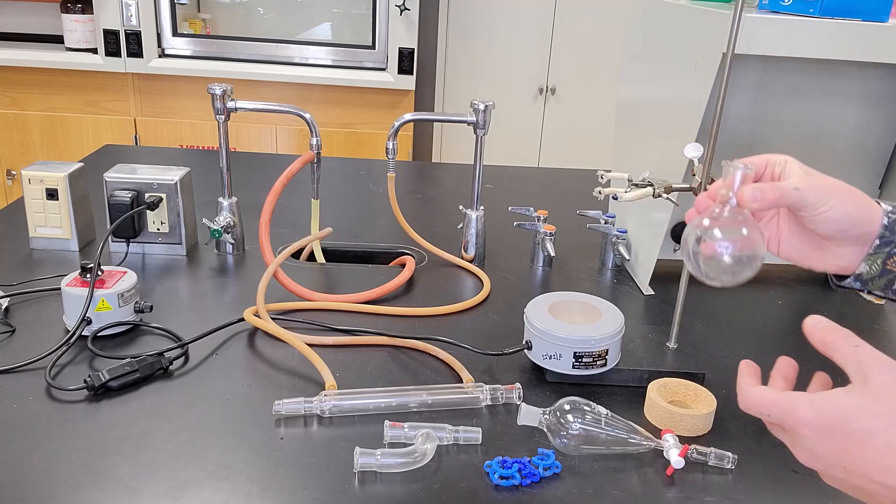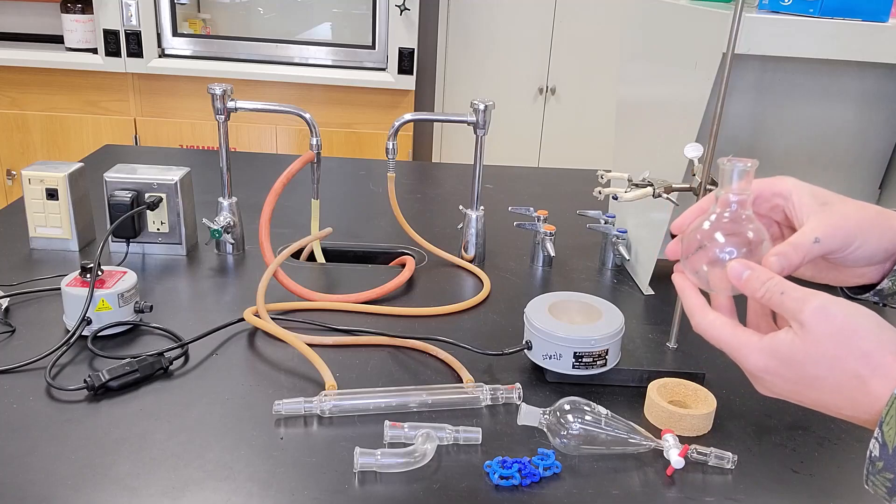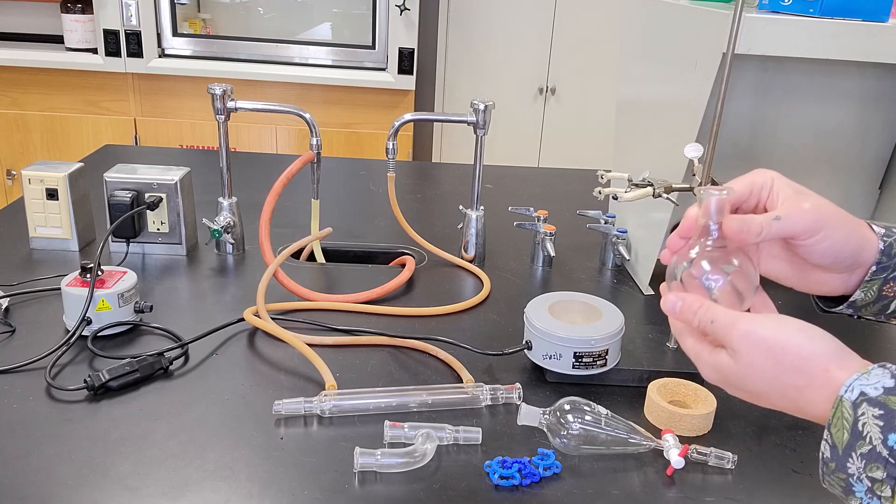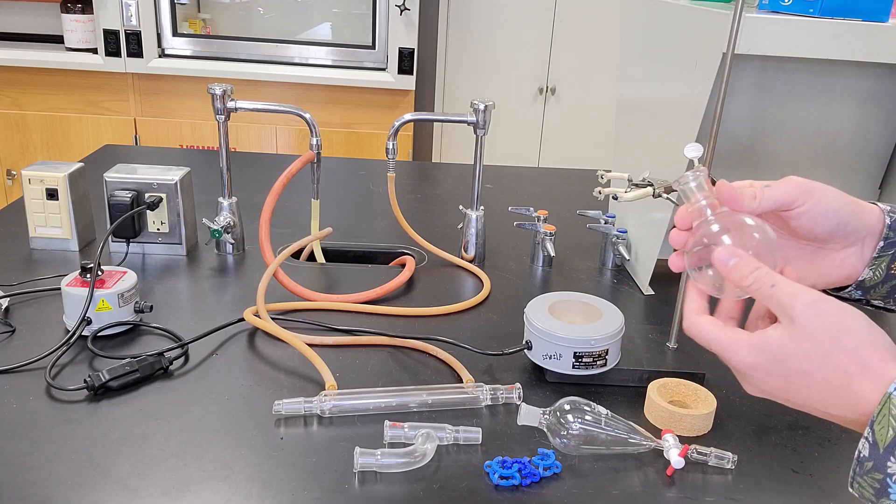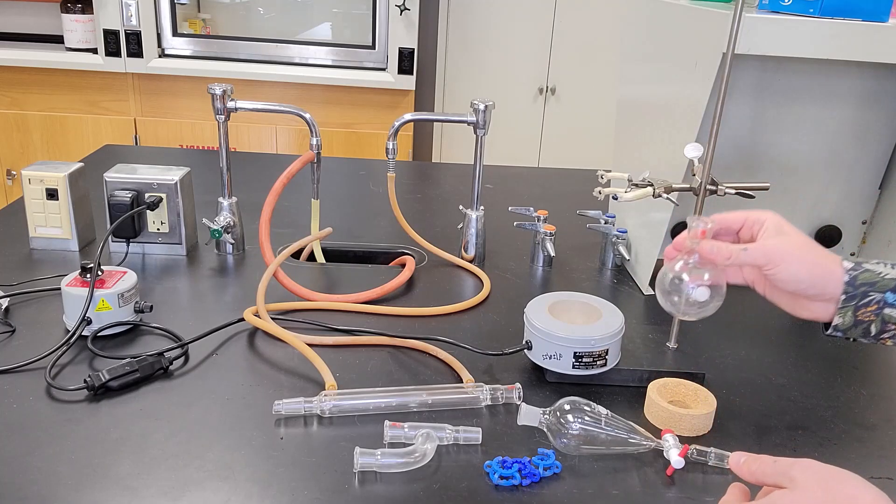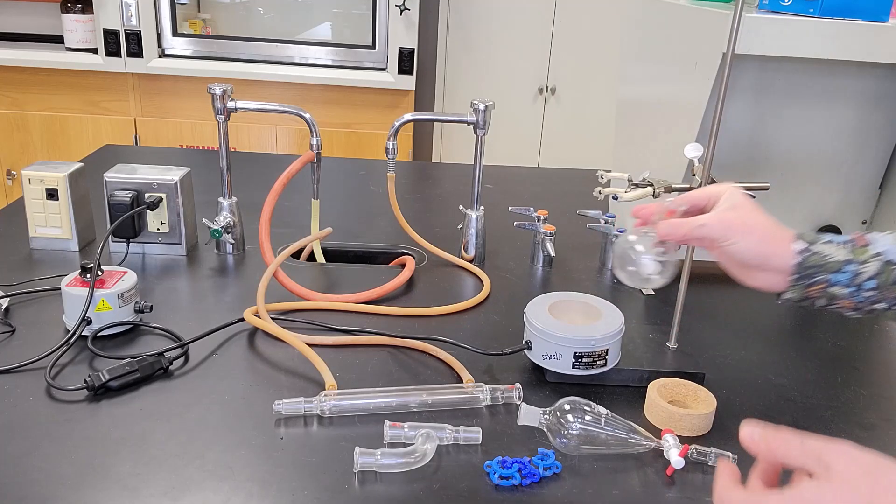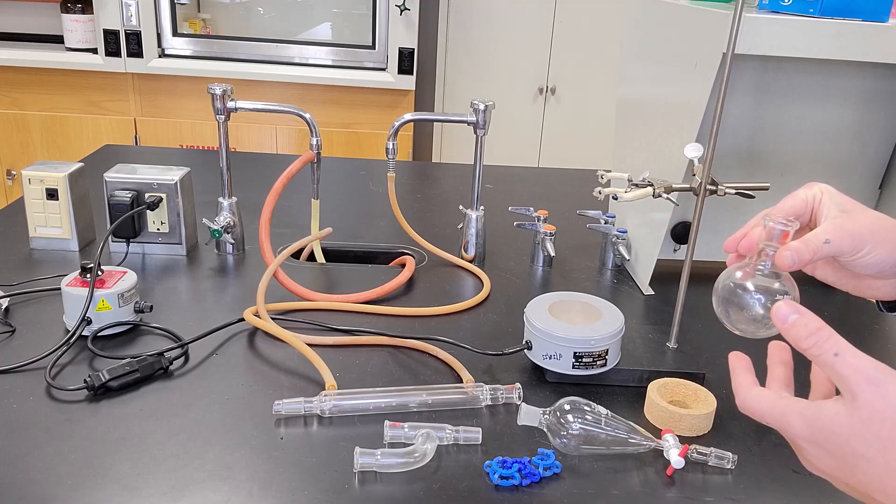So again, similar to our previous setups, we would have our original reaction mixture or starting materials in a round bottom flask. This is a fritted round bottom flask, it's 100 mils. The 100 mil one fits nicely in this heating mantle.